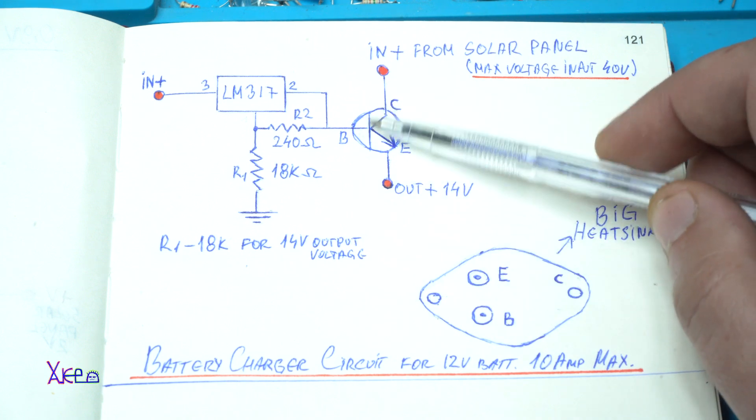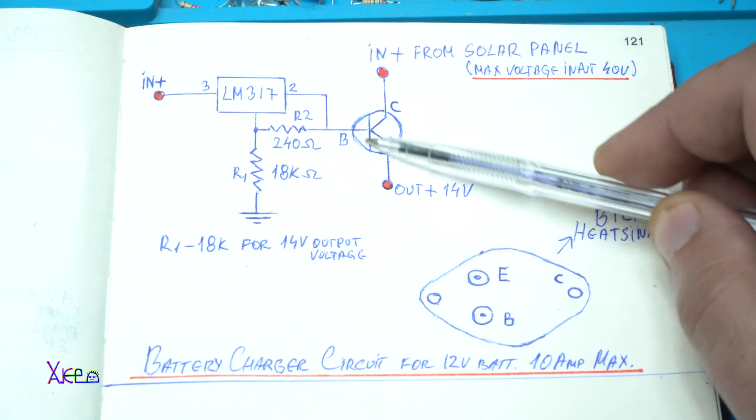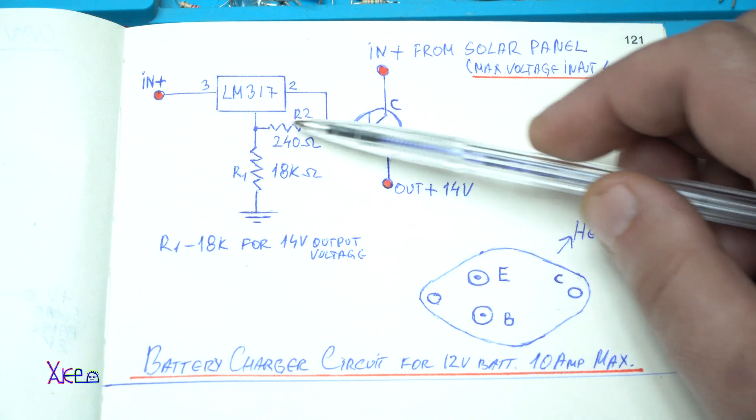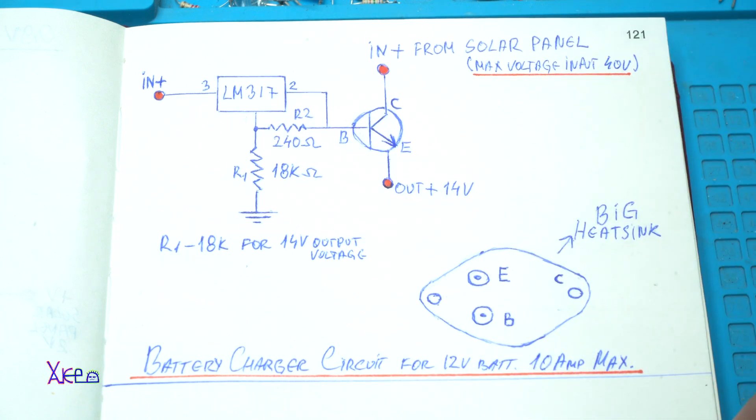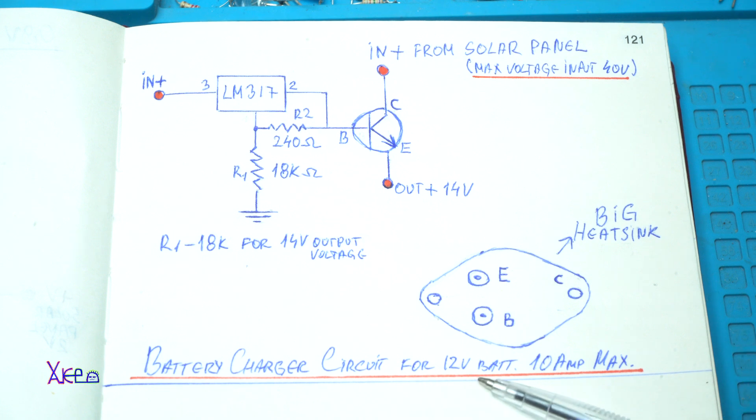So we need to control the N-P-N, the powerful N-P-N transistor with the voltage regulator. So this is battery charger circuit for 12 volt battery 10 amp maximum.